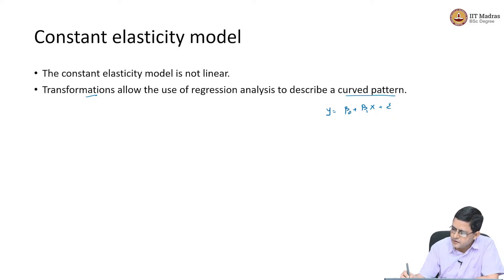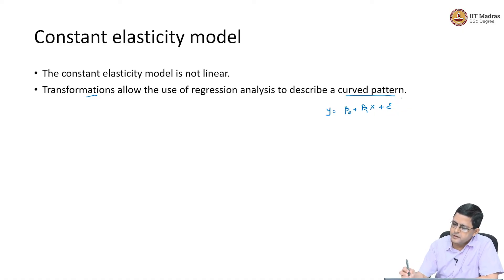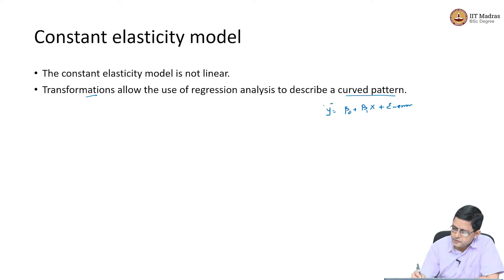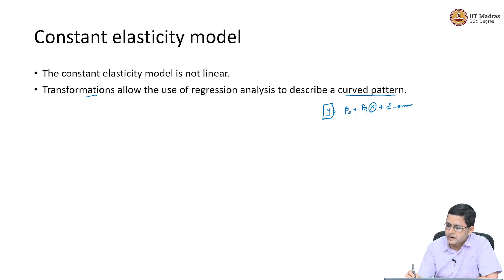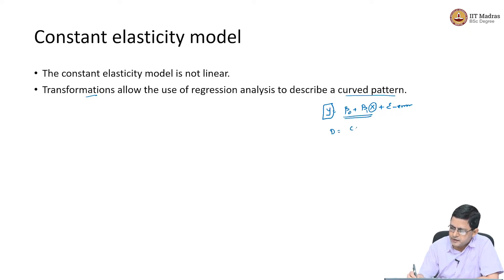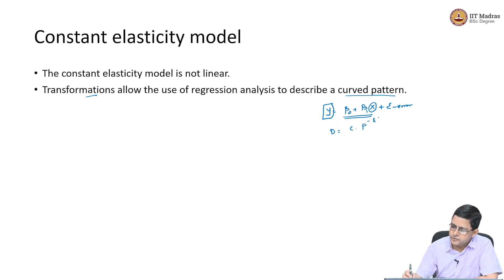Epsilon is the error term — we are separating out elasticity and epsilon. This is your response variable, this is your explanatory variable. This relationship is linear, but our current relationship is not linear: it is c into p to the power of negative epsilon, where epsilon is the elasticity.